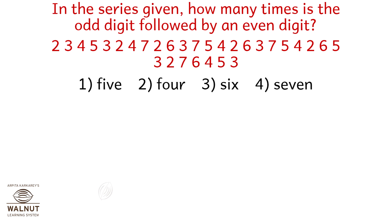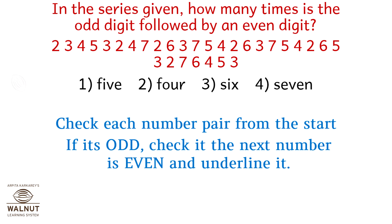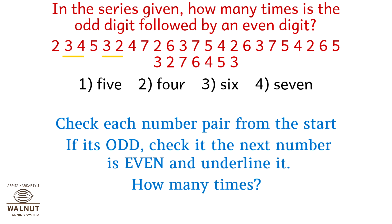In the series given below, how many times is an odd digit followed by an even digit? Check each pair: 3 and 4, 3 and 2, 7 and 2, 5 and 4, 5 and 4 again, 3 and 2, 7 and 6. Counting: 1, 2, 3, 4, 5, 6, 7 — seven times. So the correct answer is option four, 7.